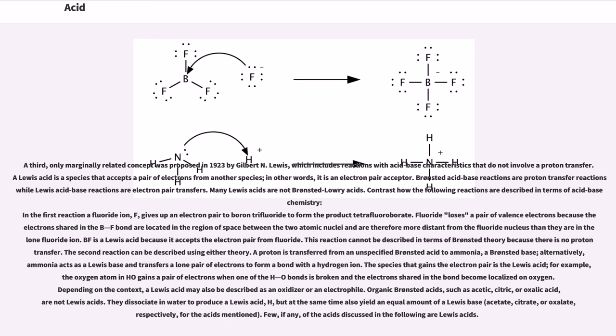Fluoride loses a pair of valence electrons because the electrons shared in the B-F bond are located in the region of space between the two atomic nuclei and are therefore more distant from the fluoride nucleus than they are in the lone fluoride ion. BF3 is a Lewis acid because it accepts the electron pair from fluoride. This reaction cannot be described in terms of Brønsted theory because there is no proton transfer. The second reaction can be described using either theory. A proton is transferred from an unspecified Brønsted acid to ammonia, a Brønsted base. Alternatively, ammonia acts as a Lewis base and transfers a lone pair of electrons to form a bond with a hydrogen ion. The species that gains the electron pair is the Lewis acid.